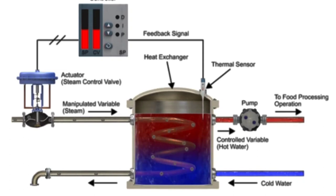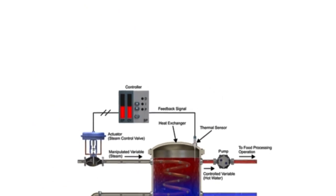Using an example of a heat exchanger, the operation of a closed-loop system is compared with a block diagram.